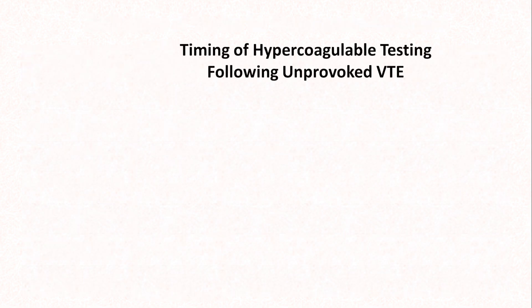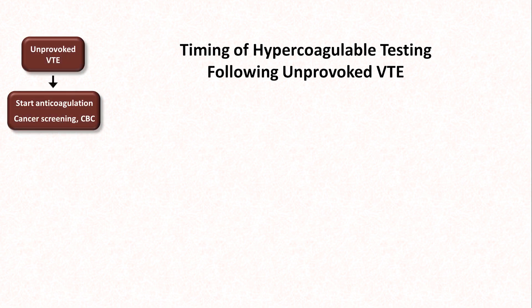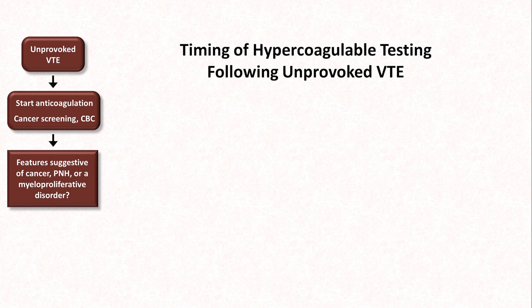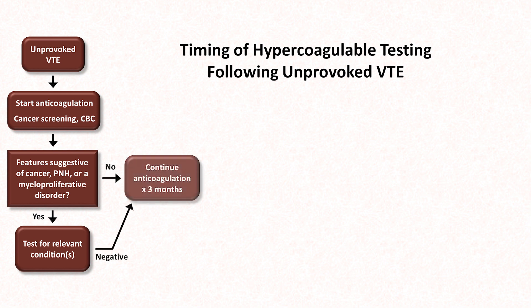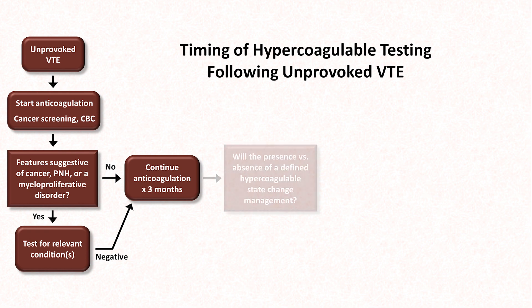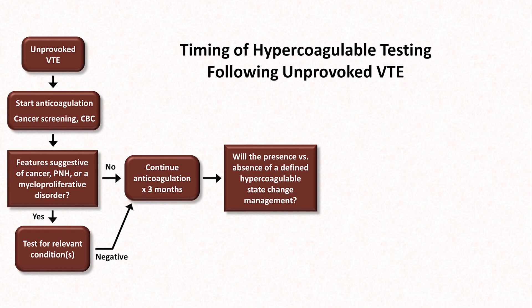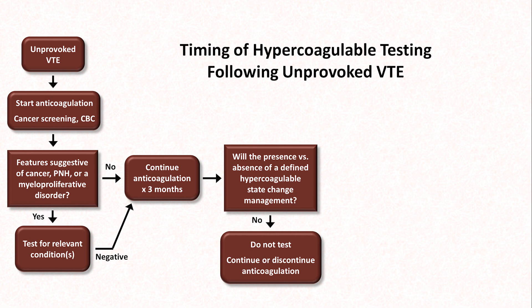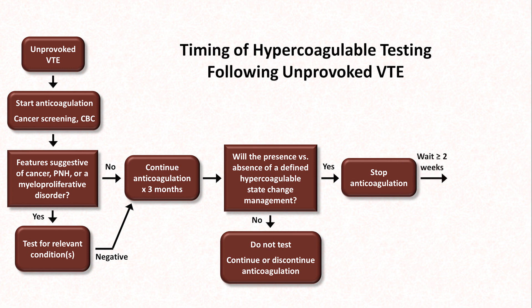I'll end this video by reviewing what the timing of hypercoagulable testing should look like following an unprovoked VTE. Following an unprovoked venous thrombus, start anticoagulation right away assuming there's no absolute contraindications, and do age-appropriate cancer screening, CBC, plus or minus a chest x-ray. If there are features suggestive of cancer, PNH, or a myeloproliferative disorder, test for the relevant condition. If there are no suggestive features or that testing is negative, continue anticoagulation for three months. At that point, ask whether the presence versus absence of a defined hypercoagulable state will change management. If not, don't test for one, and just continue or discontinue anticoagulation as per shared decision-making with the patient. If it will make a difference, stop anticoagulation and wait at least two weeks for washout of the med and recovery of factor levels. At this point, you can test for the relevant inherited thrombophilias and/or APS.